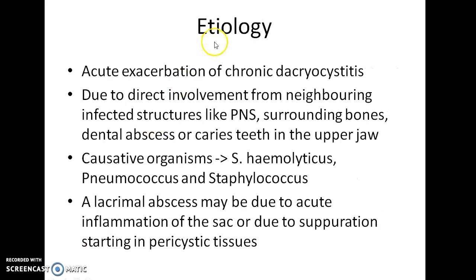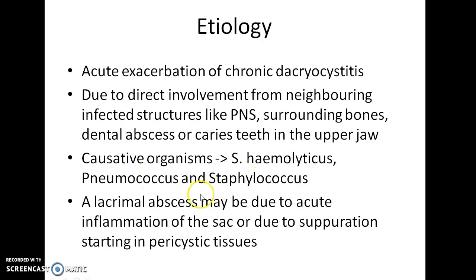Now let us see about the etiology of Acute Dacryocystitis. It can be an acute exacerbation of chronic Dacryocystitis, or it can be due to direct involvement from neighboring infected structures like paranasal sinuses, surrounding bones, or dental abscess or carious teeth in the upper jaw. The common causative organisms are Streptococcus haemolyticus, pneumococcus, and staphylococcus. A lacrimal abscess may be due to acute inflammation of the sac or due to suppuration starting in pericystic tissues.